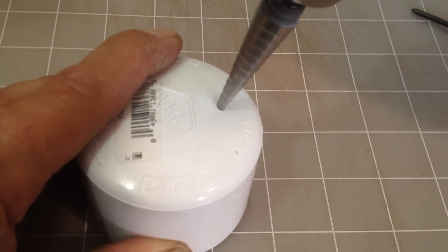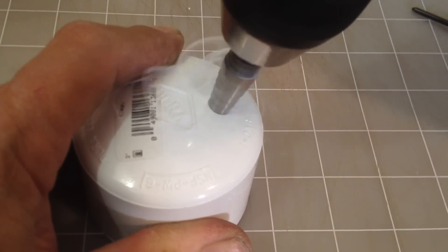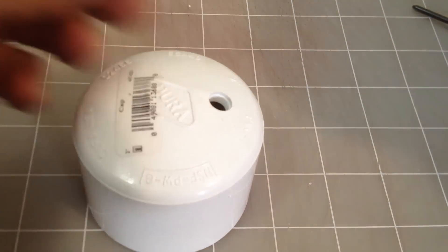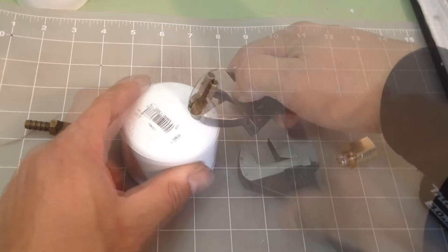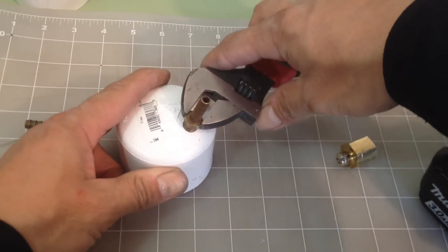I start by using a step bit to drill a hole in a 2 inch PVC end cap. I drill the hole just large enough to thread in a 1-8 inch barbed fitting.